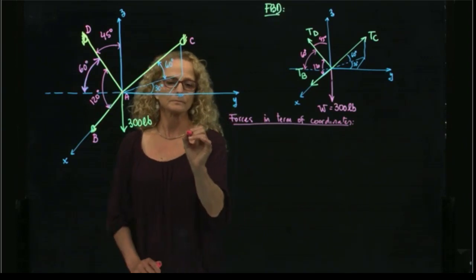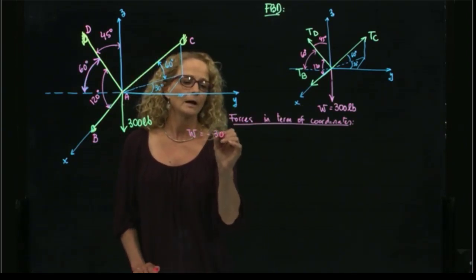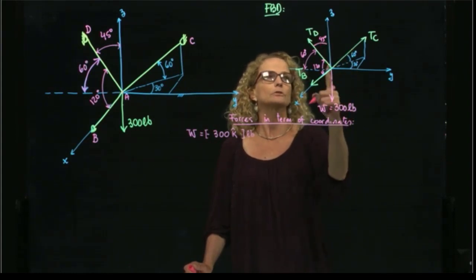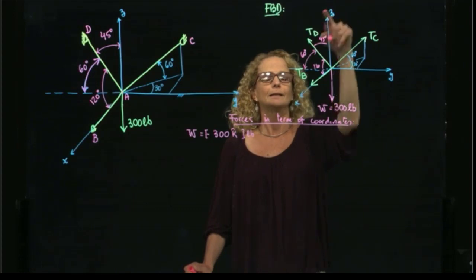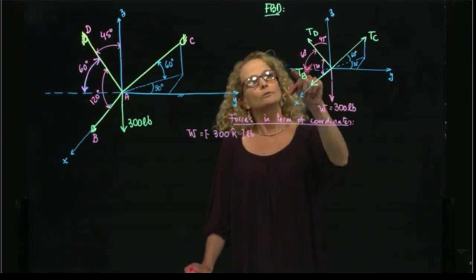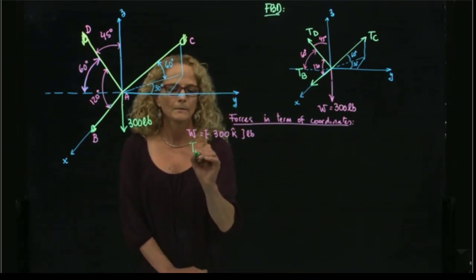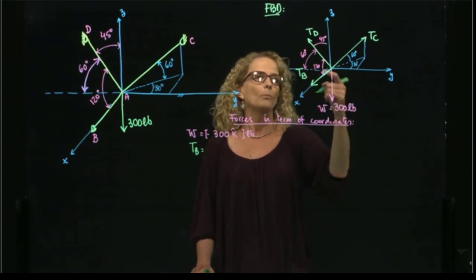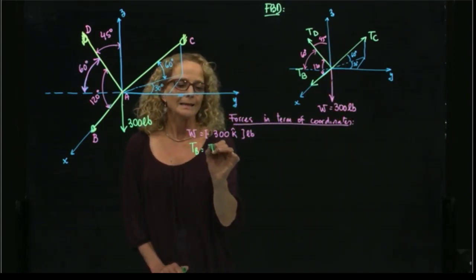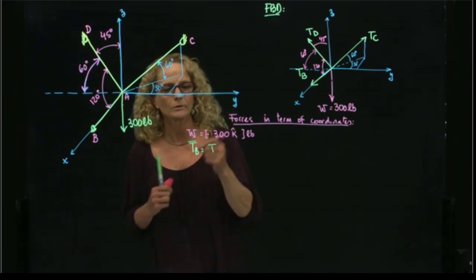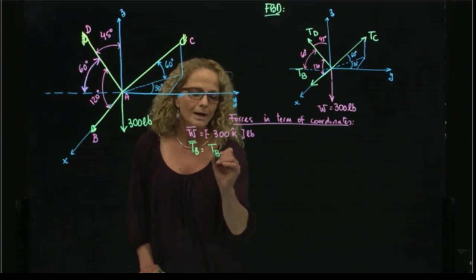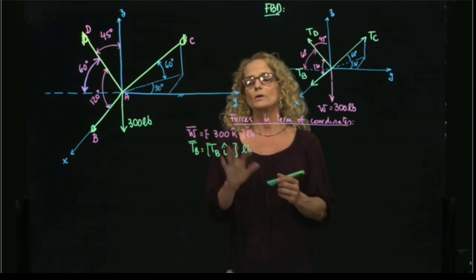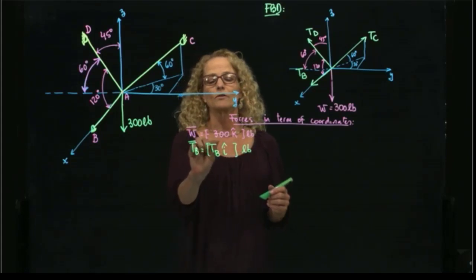So I have the weight, which is negative 300 K pounds. It's negative because it goes in the opposite direction to the positive arrow of my Z axis. For TB, it is in the positive direction of X and does not have any component in Y or Z. Therefore, it is the magnitude times the direction in I, in pounds. I always write the vector in terms of a magnitude and a direction.